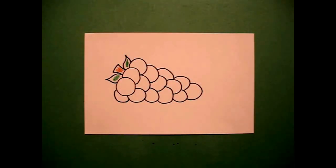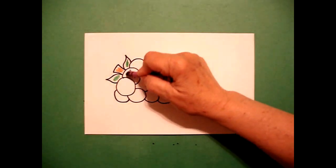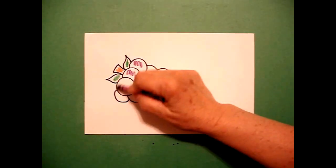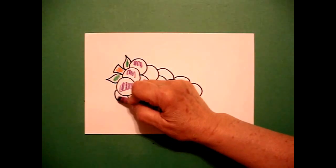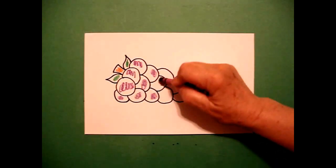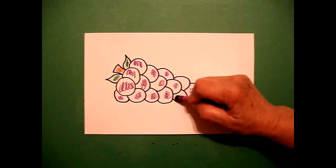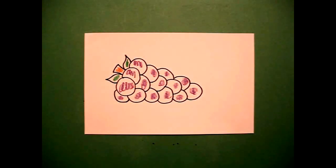Now, what's fun about grapes is they come in so many different colors. You can do them green, you can do them red, and of course, you can do purple. So what I do is I do every single grape purple all the way down. And I'm done.